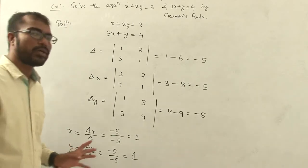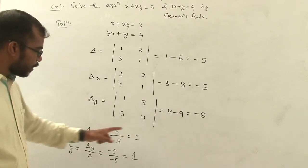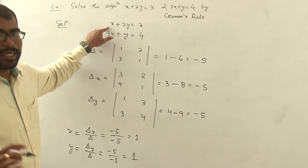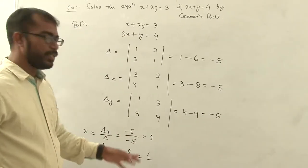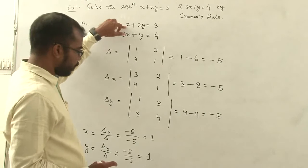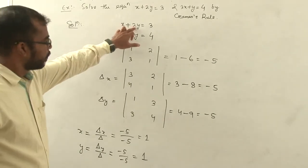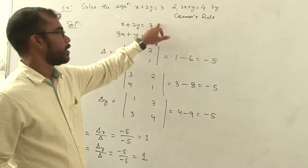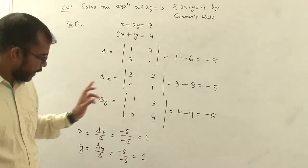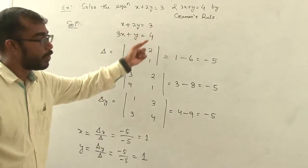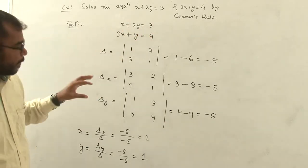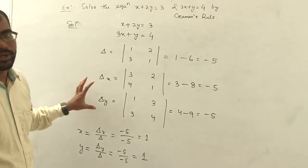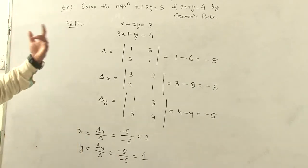So x is equal to 1 and y is equal to 1 — that is the solution. How to check if the values are right: put the values of x and y into the equations. If it is satisfied then our answer is correct. So here x and y are satisfied in both equations, so we have the correct values. Now we have to solve another example with 3 variables, meaning we need 3 equations.